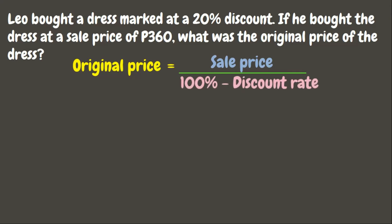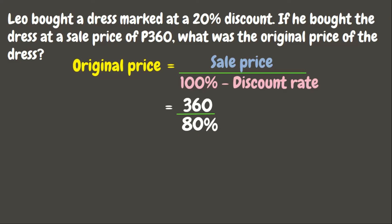We divide the sale price by 100% minus the discount rate. Here the sale price is 360, divided by 100% minus the discount rate which is 20%, so that is 100% minus 20% which is 80%. Before we can divide, we need to change the percent into decimal. Now let us divide 360 by 0.80.